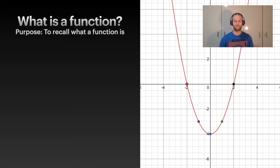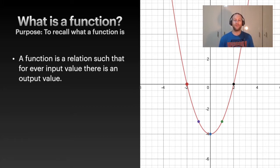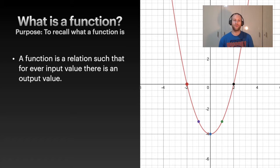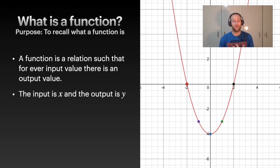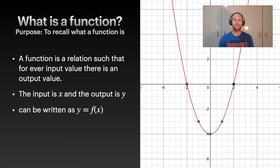So what is a function? A function is a relation where for every input value there is an output value. You can think of a function as a box — an input goes in, something happens inside, and it spits out an output. The input is the x value and the output is the y value. Functions are normally written as y = f(x), though you might see different variables — this is just the general notation.